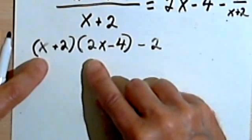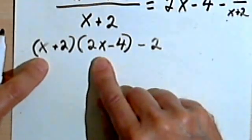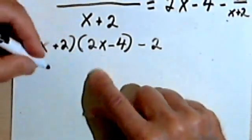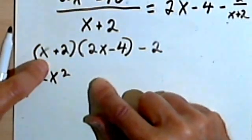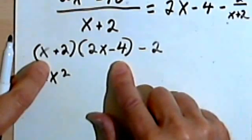So the first term times the first term is x times 2x. That gives me 2x squared. x times negative 4, my outside terms, that gives me negative 4x.